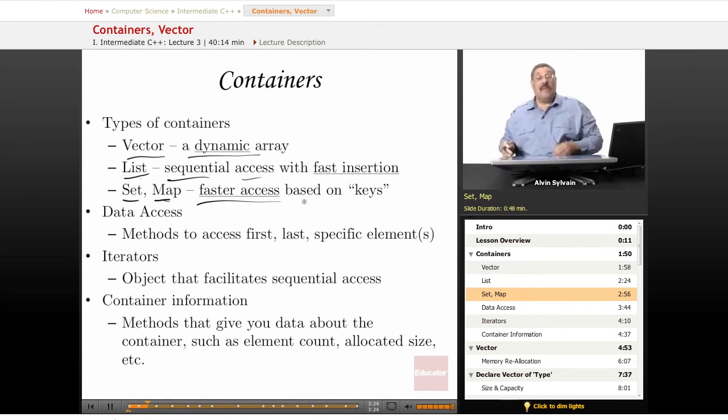So a vector or an array is not very fast for access when you need a dictionary-type lookup, whereas sets and maps give you faster access. We will talk about those in the next lesson.